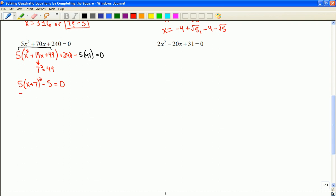And I can start solving like we did previously as we were warming up to this. Just trying to isolate what's being squared. So x plus 7 squared is equal to 1. Now I can take the square root of both sides.